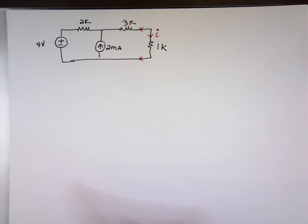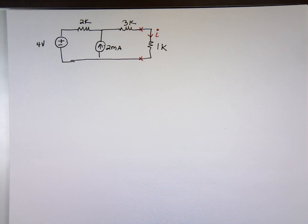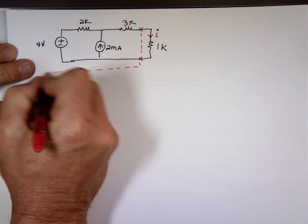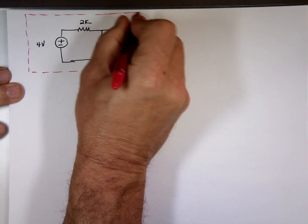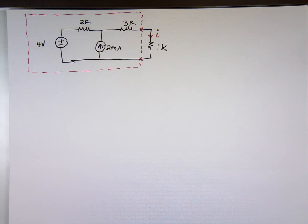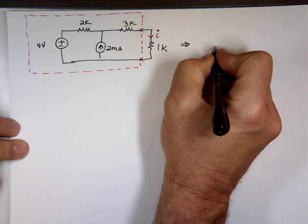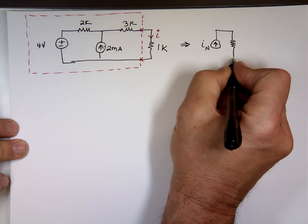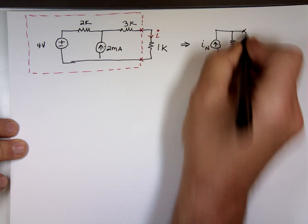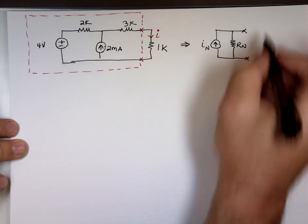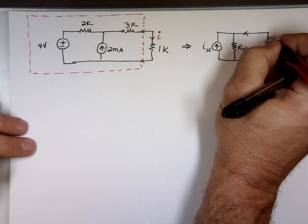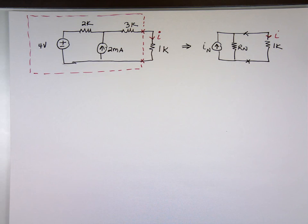Since I'm looking for current, it really makes sense to use the Norton equivalent, because you'll have a current source in parallel with the resistor, and you can use current division. So I'm going to find the equivalent of this circuit — take the entire circuit in the red dotted box and replace it with a current source pointing upward called I_N (I Norton), in parallel with a resistor called R_N. That's the equivalent. Now let's bring in the 1k load resistor. Once I know I Norton and R Norton, I can find I using current division.